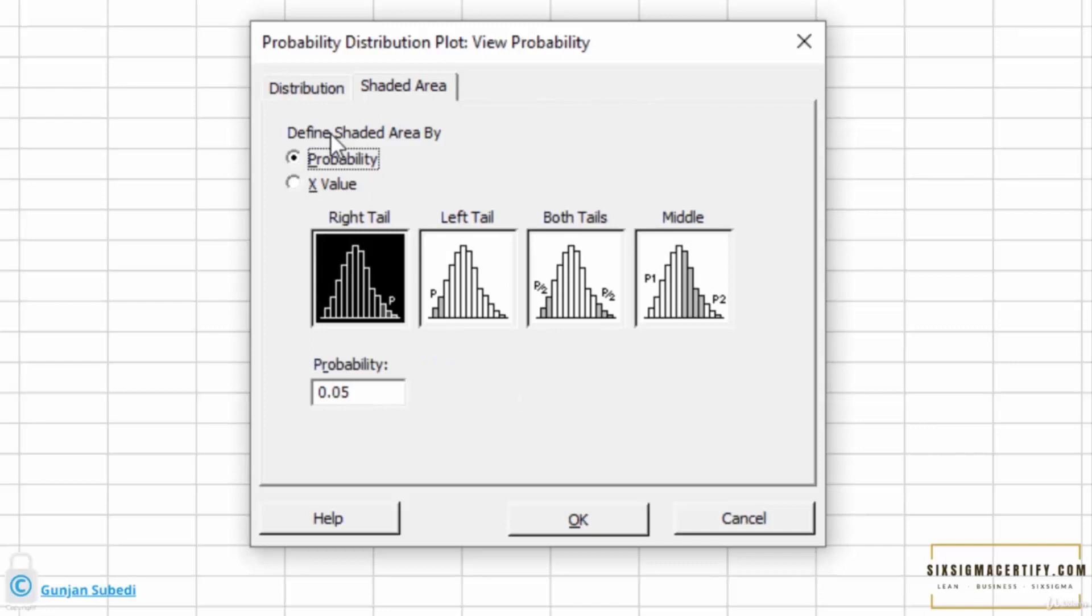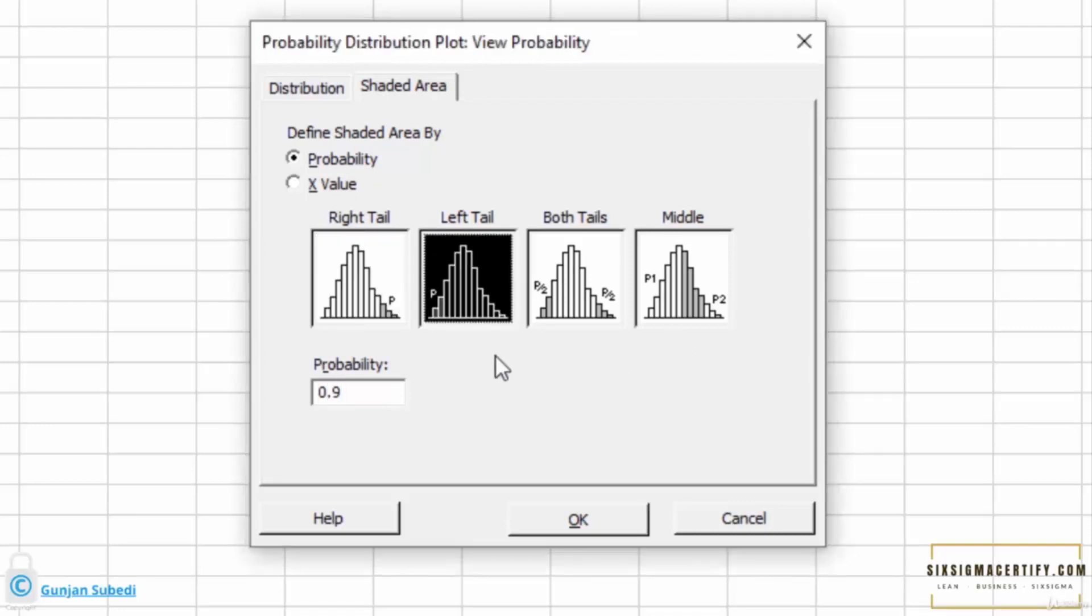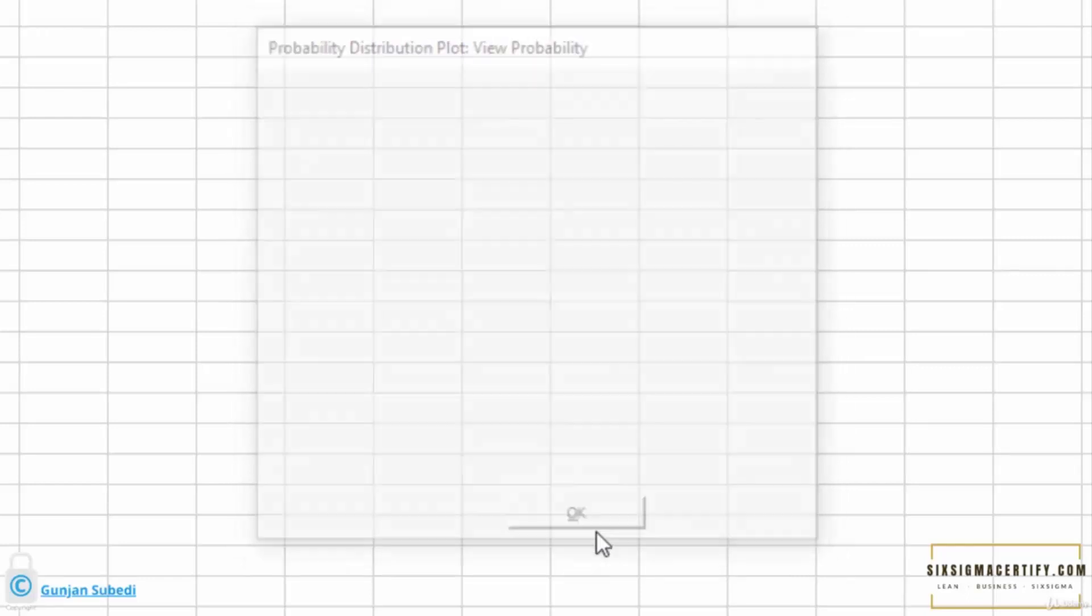Now we have to define the shaded area by probability. The probability is 90%, which is 0.9. We have to be 90% certain here. We click Left Tail because left tail sets those areas from 0 to 90%. As we have to find the maximum number of air crashes with 90% certainty, we write 0.9 and click OK.